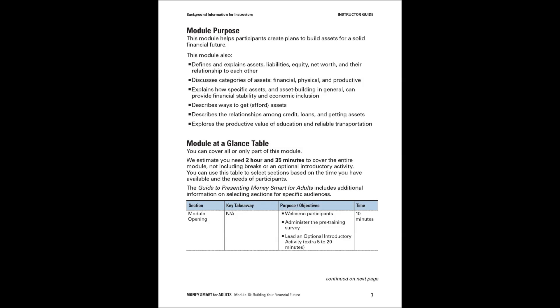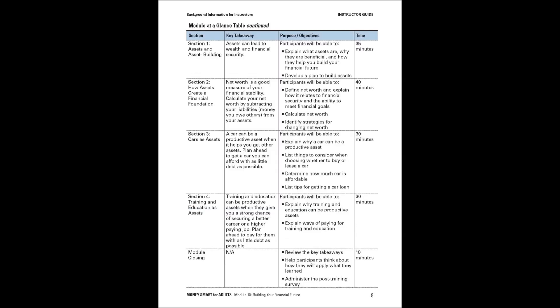The module purpose is to help participants create plans to build assets for a solid financial future. The module at-a-glance table lists the sections, key takeaway, purpose objectives, and time estimates. Please refer to the guide to presenting Money Smart for Adults, which includes additional information on selecting sections for specific audiences so that you can further customize your training.